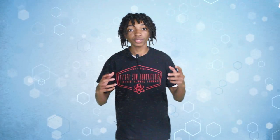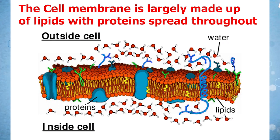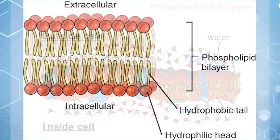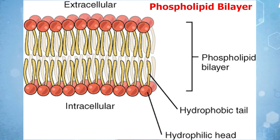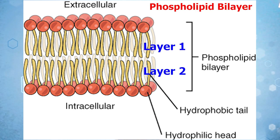Now that we have some background knowledge, let's explore the different parts of the cell membrane. The cell membrane is largely composed of lipids with proteins spread throughout. These lipids are known as the phospholipid bilayer, which basically means it has two layers.